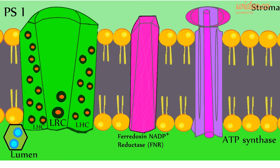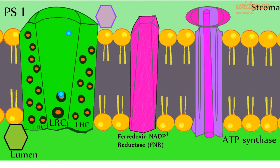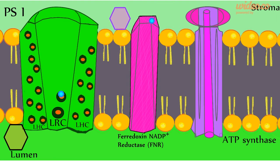Electrons then travel to the special chlorophyll molecules in photosystem I. A photon transfers its energy throughout the complex, and an electron is transferred to a higher energy state, being released and picked up by the mobile carrier ferredoxin. Ferredoxin then transfers the electron to ferredoxin NADP+ reductase, or FNR. This process happens again until the FNR has two electrons.